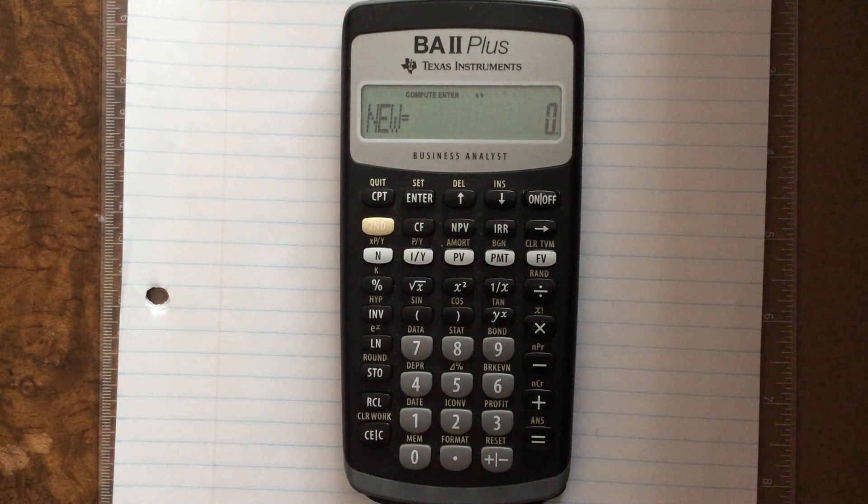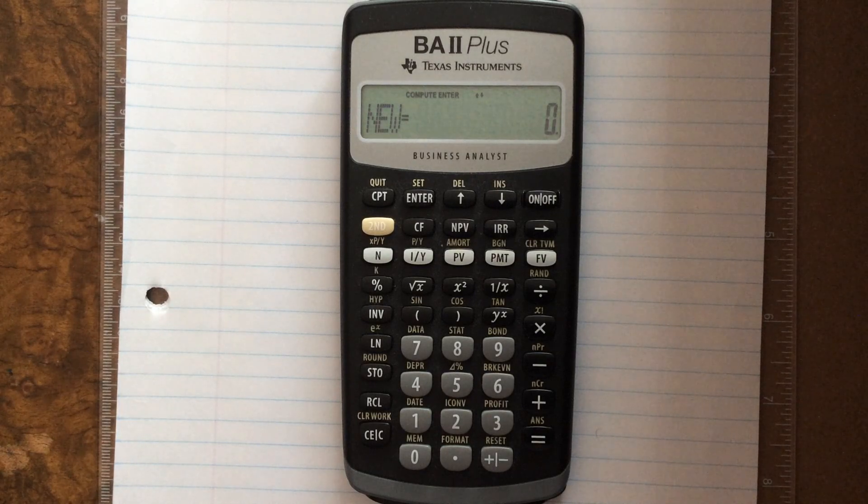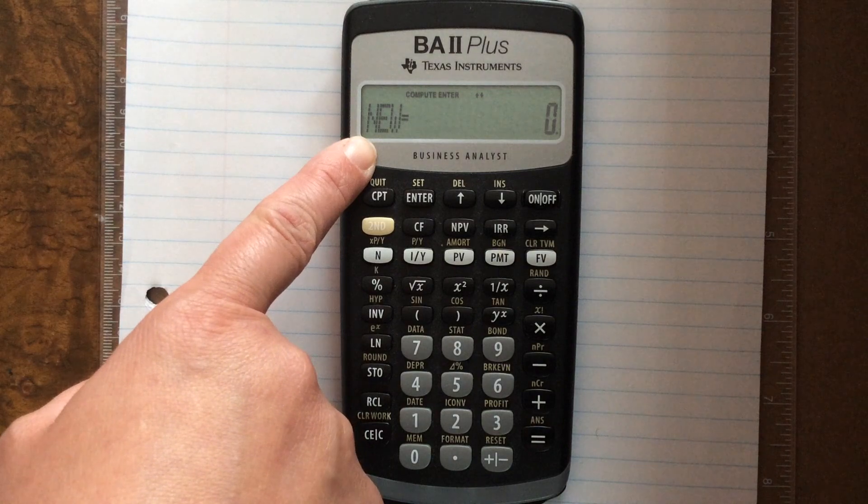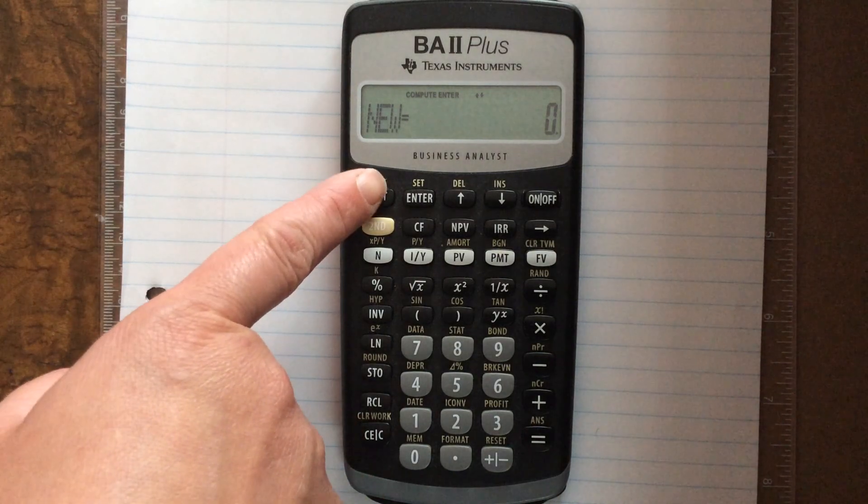I'm going to scroll back up to my value that I'm looking for. I have all the other components input, and I'm looking to find out what is my new value. So I've got new on the screen, that's what I'm looking for, and then I'm going to hit the CPT button.